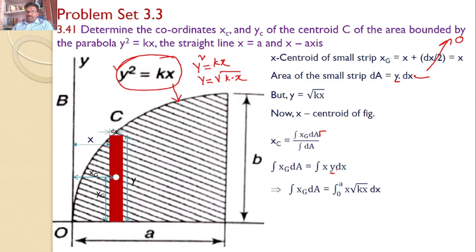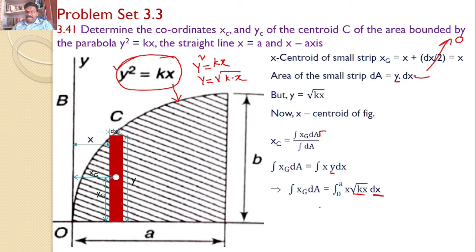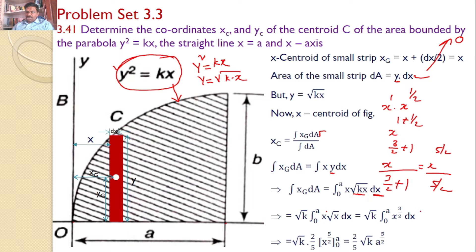The integration limits for dx are from 0 to a. Taking √k outside: √k · ∫₀ᵃ x · x^(1/2) dx = √k · ∫₀ᵃ x^(3/2) dx. Integrating: x^(3/2 + 1) / (3/2 + 1) = x^(5/2) / (5/2). This gives √k · (2/5) · x^(5/2) evaluated from 0 to a, which equals (2/5)·√k·a^(5/2).